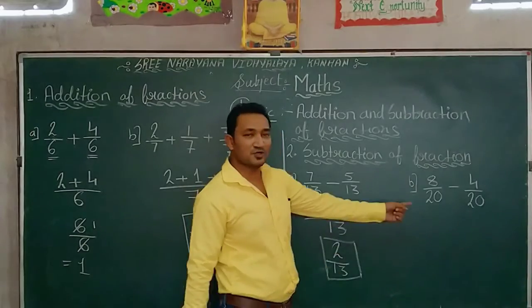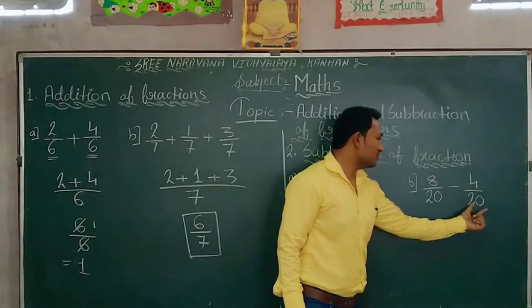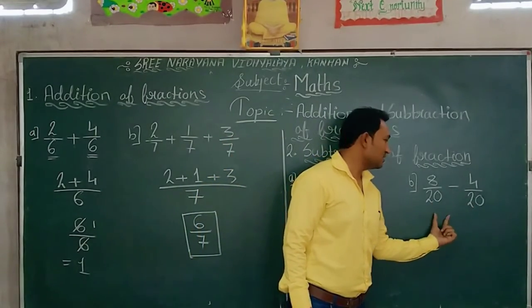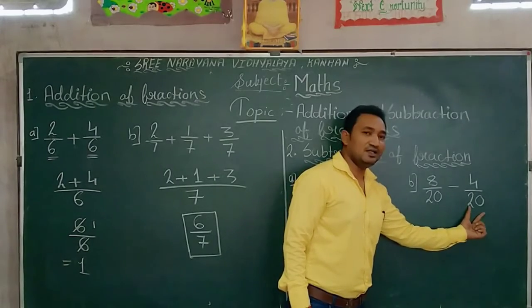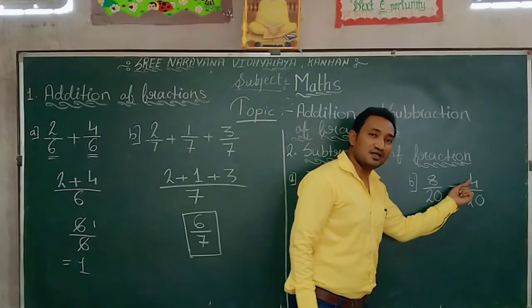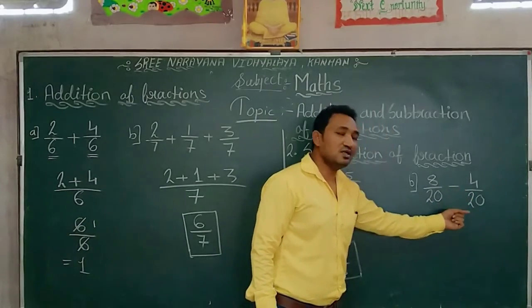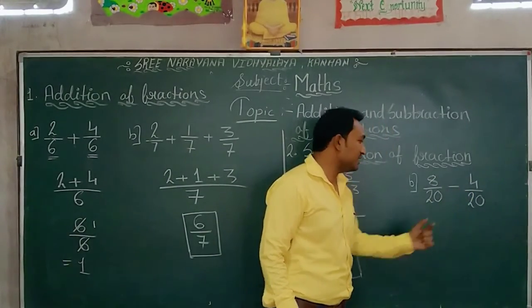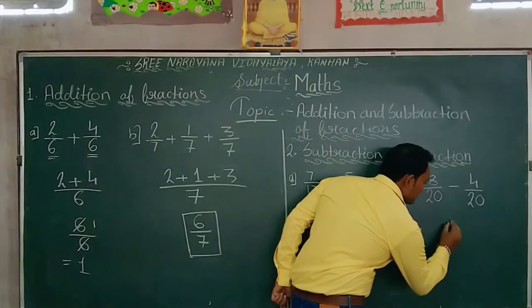Now look here. In this problem, here again denominators are equal. Means 20 and 20 are denominators and numerators are different. Look here. In this condition what we will do? We will write 20 as it is like this.